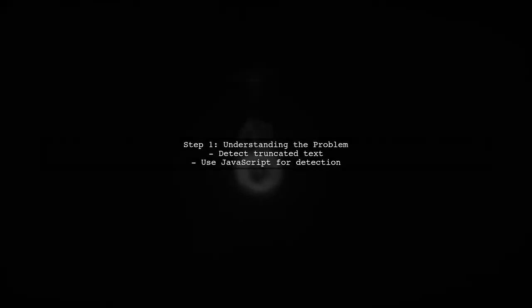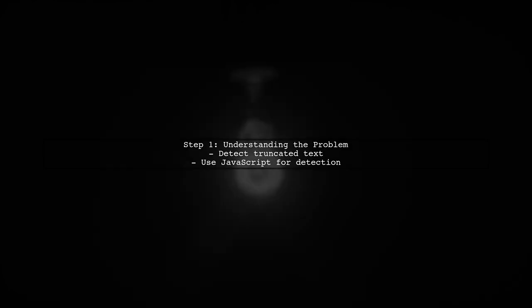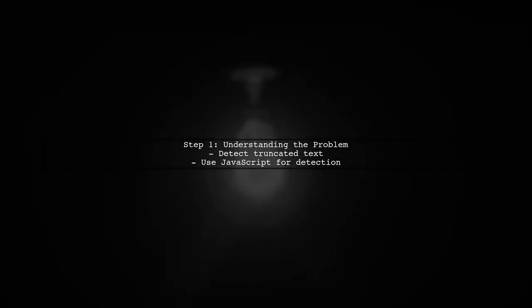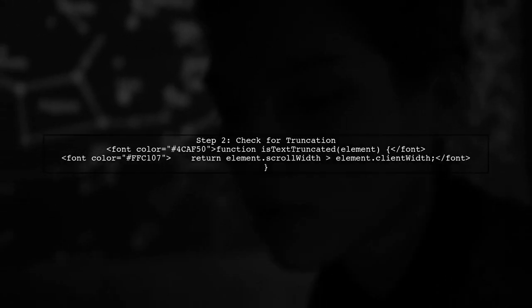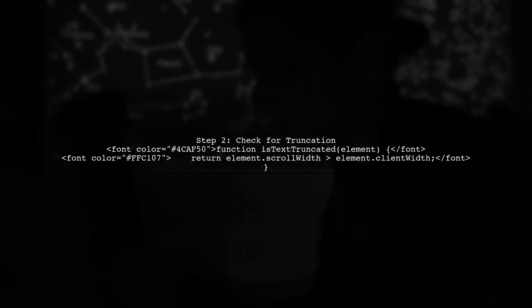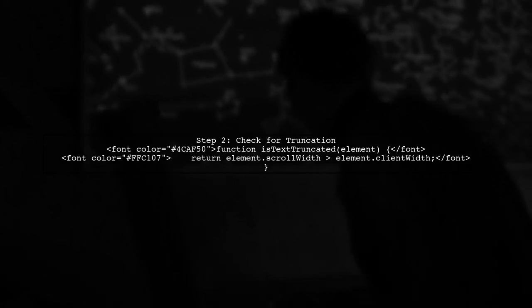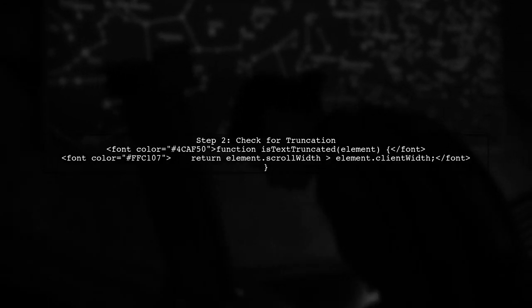To add a title property to elements with Text Overflow set to Ellipsis, we first need to understand how to detect truncated text. This can be achieved using JavaScript. We'll create a function that checks if the scroll width of an element is greater than its client width. If it is, that means the text is truncated.